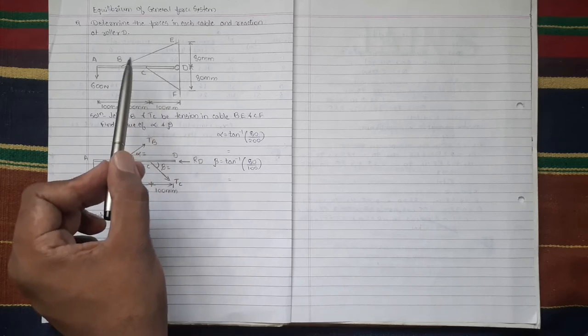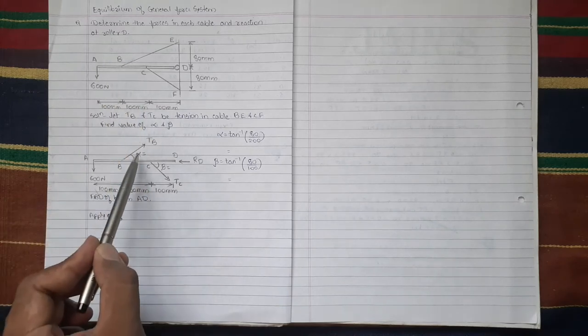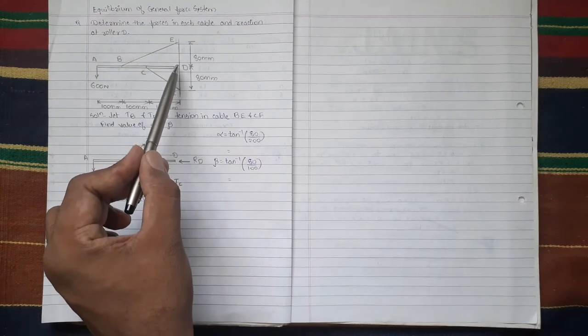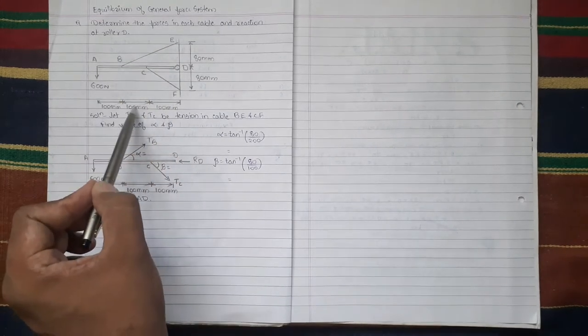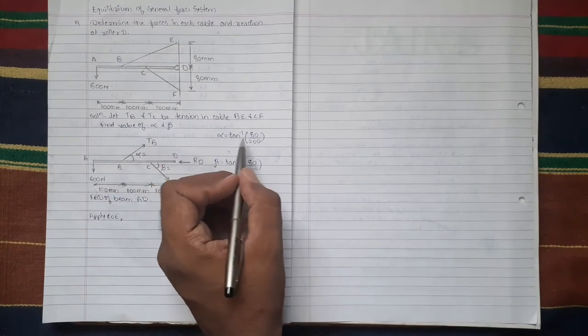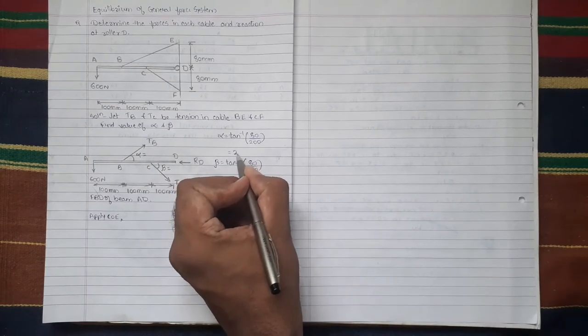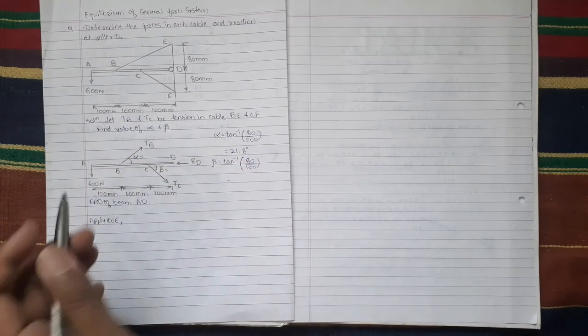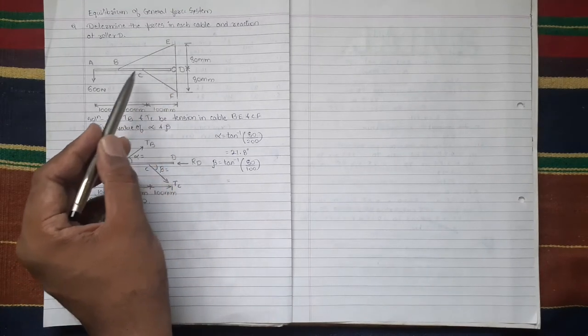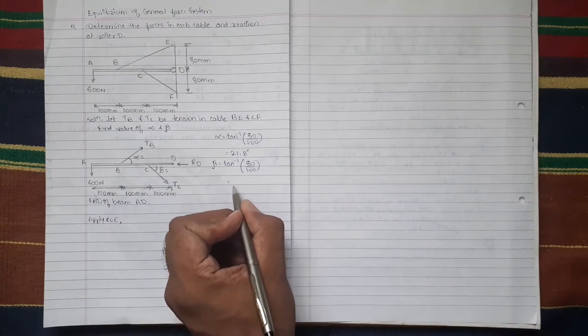To find out these values of alpha and beta, we'll take help of this dimension. To find out value of alpha, alpha is equal to tan inverse of opposite side 80 upon adjacent side 200. So value of alpha comes to be tan inverse 80 upon 200 which is equal to 21.8 degrees. To find out value of beta, we'll take tan inverse 80 upon 100 which value comes to be 38.66 degrees.